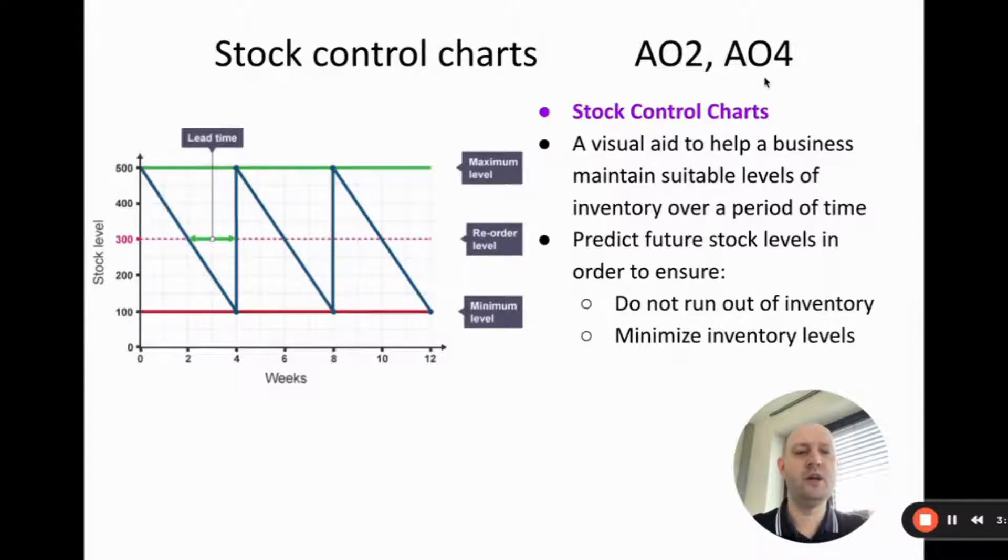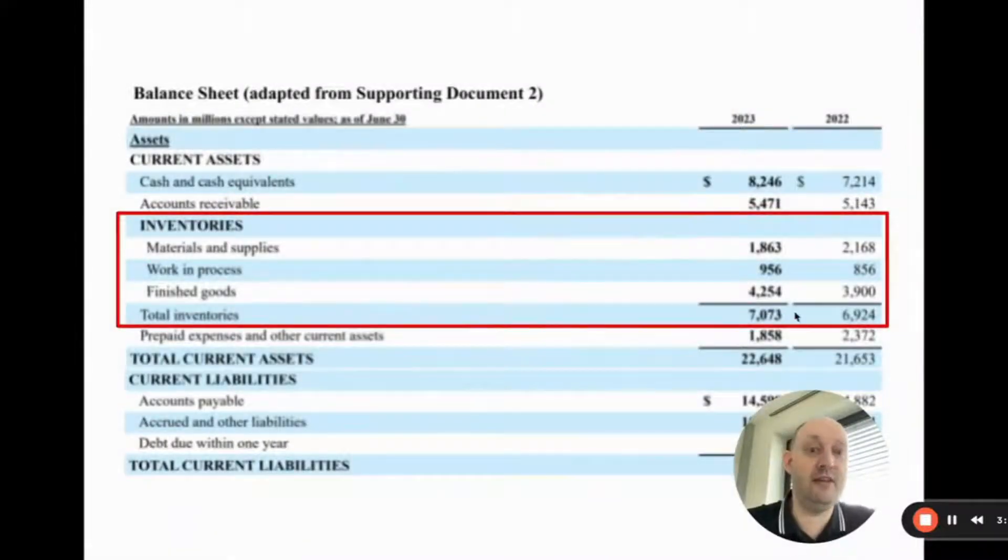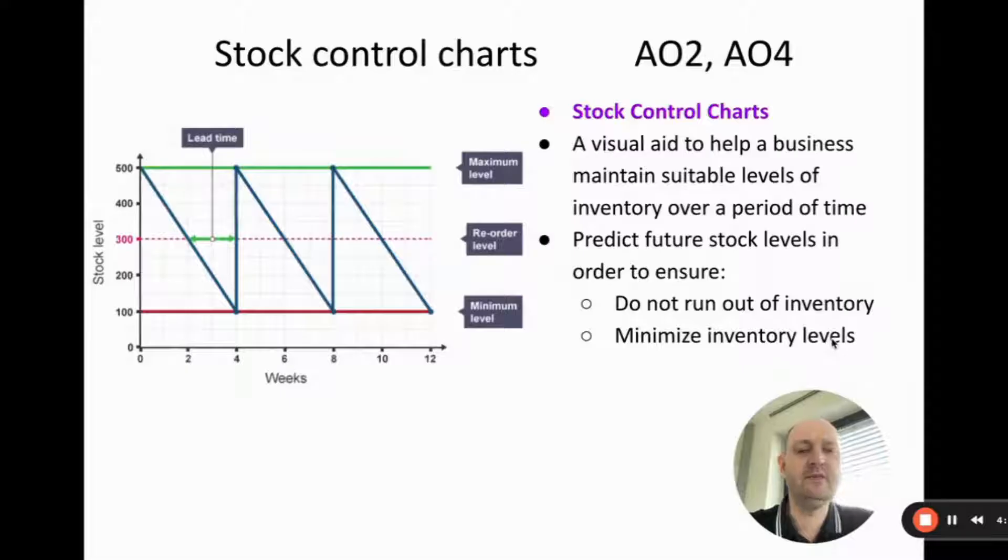The focus of this video is drawing stock control charts. Stock control charts is an AO2 and an AO4, but mostly an AO4 because we're going to be drawing these things. A stock control chart looks like this on the left. They're basically a visual aid, but it helps the business maintain suitable levels of inventory over a period of time. The key thing is you don't run out of stock, but you also want to minimize your stock levels. You don't want to hold too much stock but you also don't want to run out, and those are conflicting things. The stock control charts help us balance these two objectives.